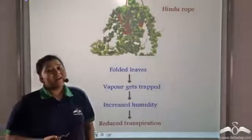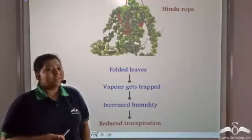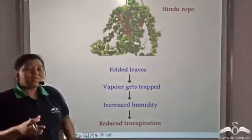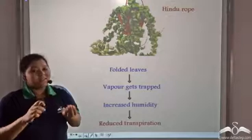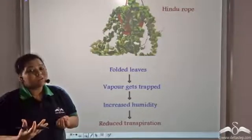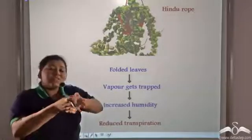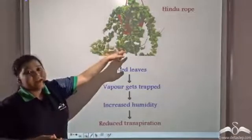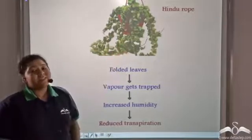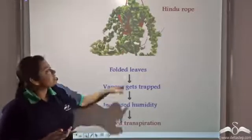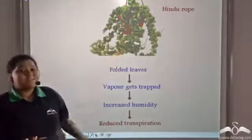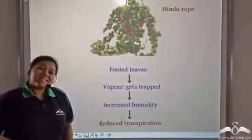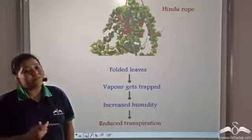Now plants that do not have sunken stomata have folded leaves, like in the plant known as the Hindu rope. They have folded leaves that contain stomata. The stomata give out water vapour that gets trapped in the foldings of the leaf. So humidity increases in these foldings, and automatically the rate of transpiration will decrease with the increase in humidity. This is another adaptation by which plants like the Hindu rope prevent excess water loss from their body.